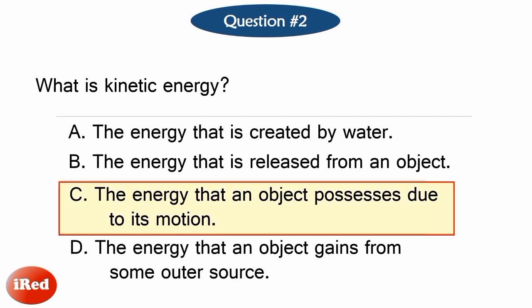The correct answer is Letter C — kinetic energy is the energy that an object possesses due to its motion. When an object is in motion, it has the ability to do work and transfer energy to other objects or systems.